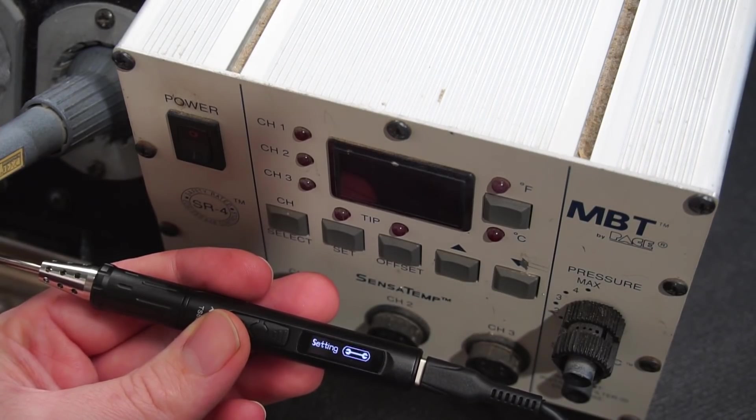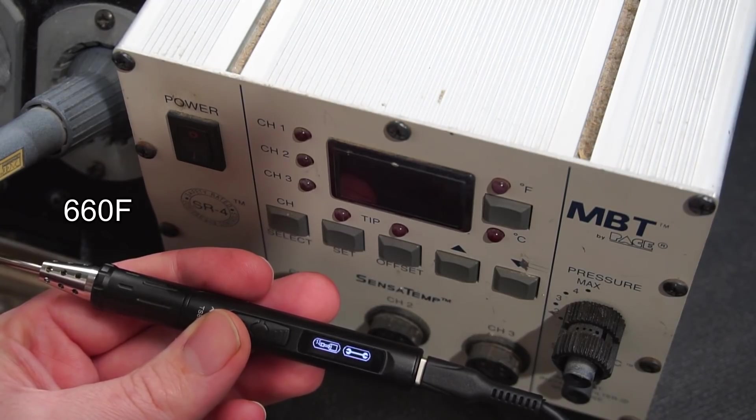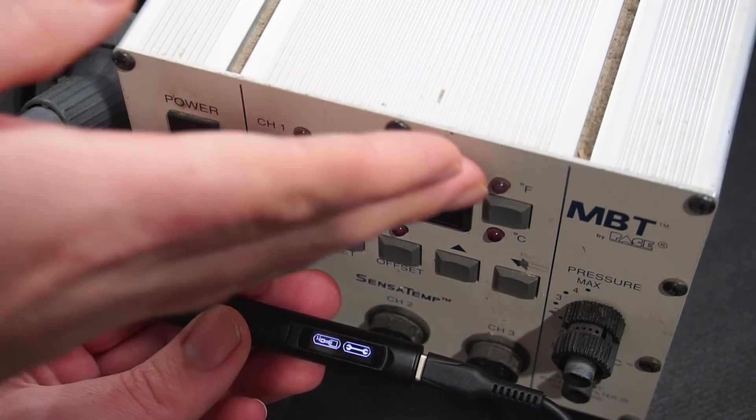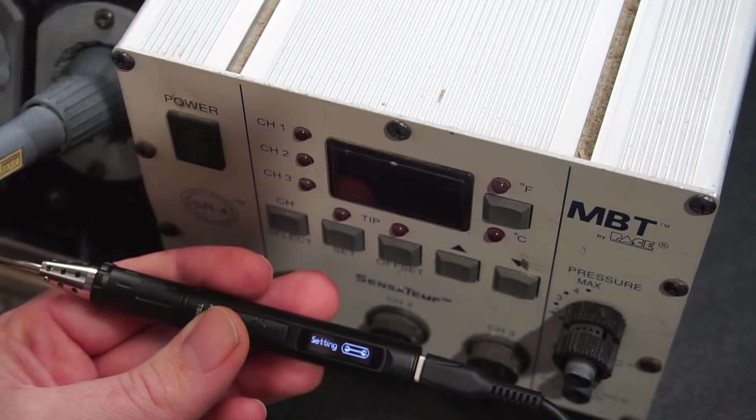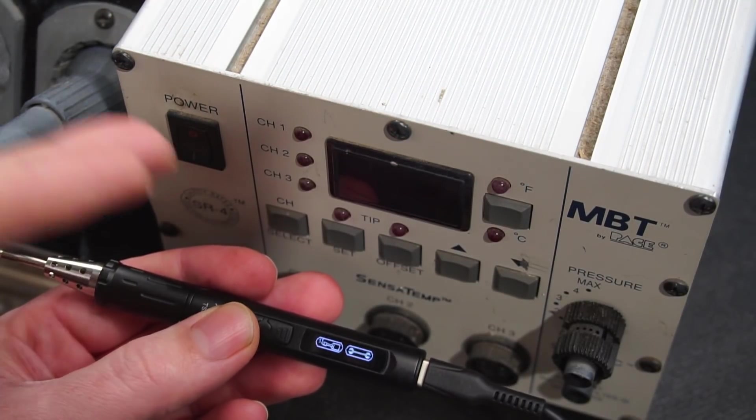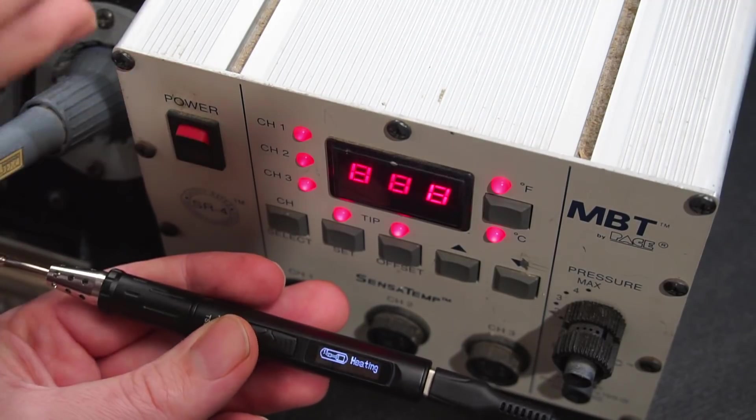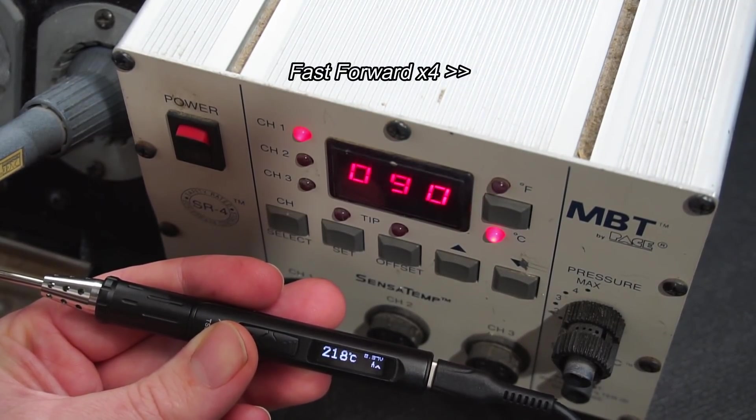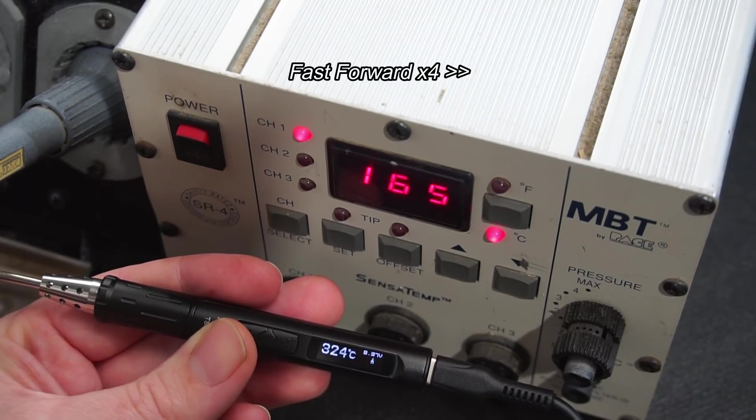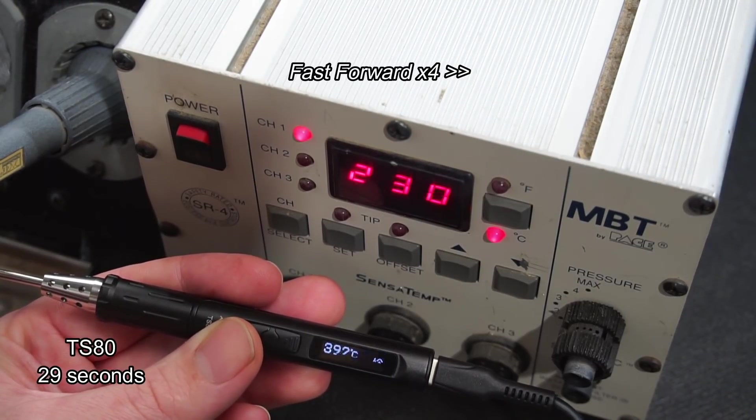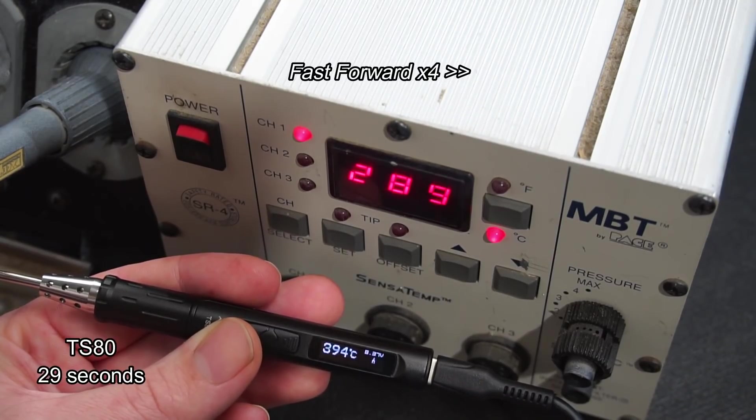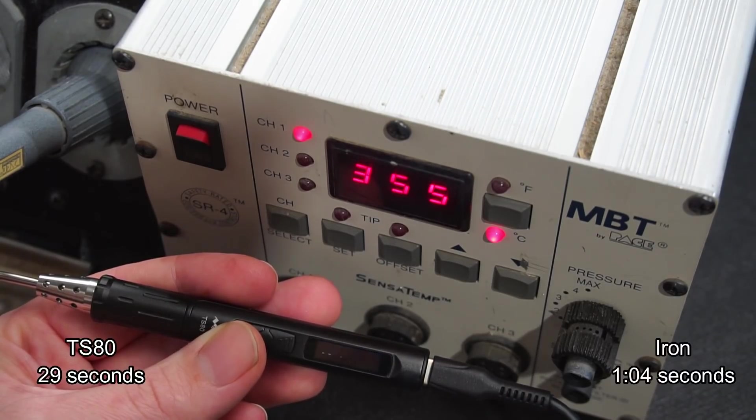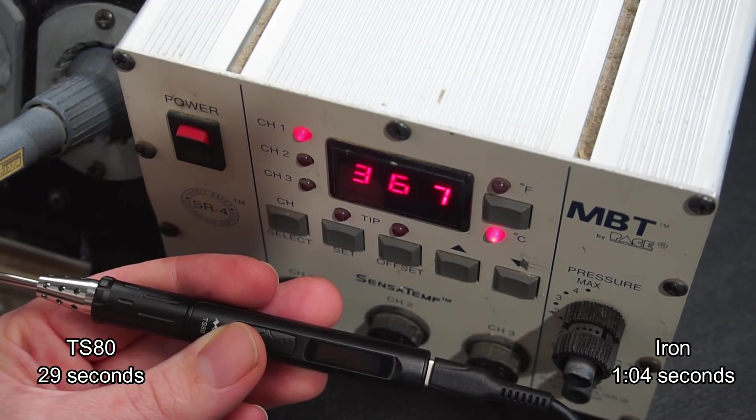Let's do a drag race. First soldering iron to 350 degrees C. Both these irons are at room temperature. I'll turn them on at exactly the same time. And I do have to change the soldering station from Fahrenheit to Celsius because it does default to Fahrenheit every time you turn it on. Three, two, one. Yay, we're finally there. Clear winner hands down TS-80.